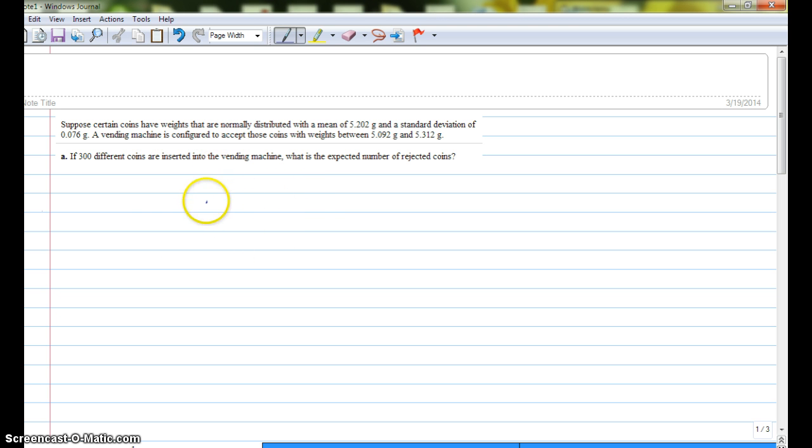Remember, expected value is the same as a mean. And to get the mean, we're going to take the probability times the number of coins. You may have seen this as NP before, but PN will be the same thing. Here our N is 300, but we need to figure out what our P is.